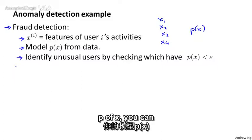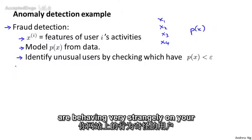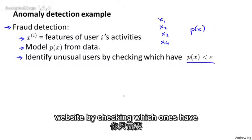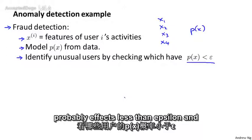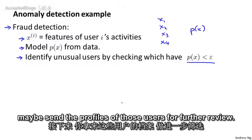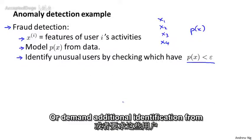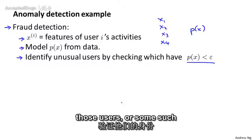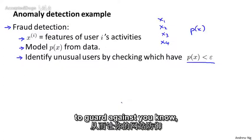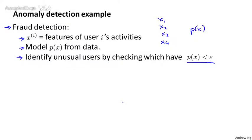And finally, having modeled P of X, you can try to identify users that are behaving very strangely on your website by checking which ones have probability of X less than epsilon. And maybe send the profiles of those users for further review. Or demand additional identification from those users to guard against strange behavior or fraudulent behavior on your website.